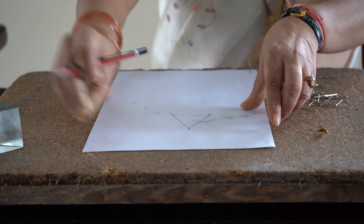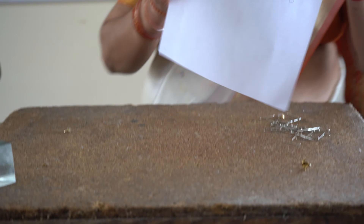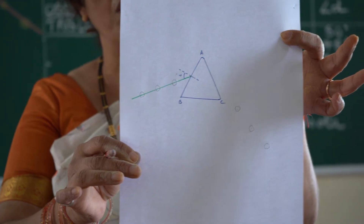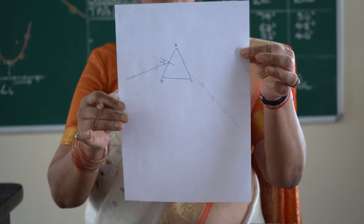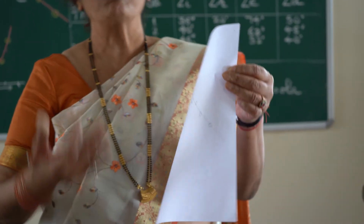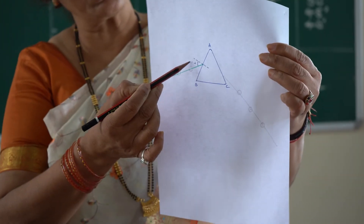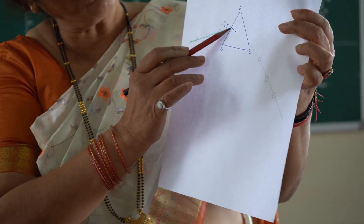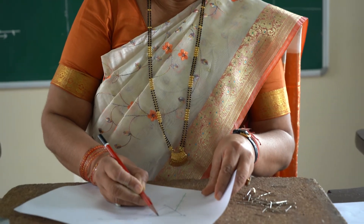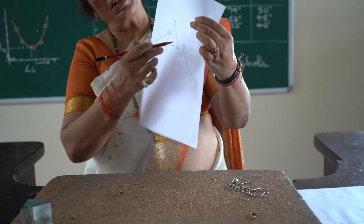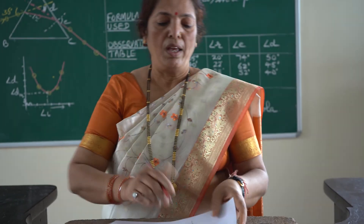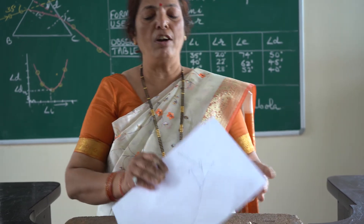Remove the paper and complete the remaining work. Join the three encircled points on the emergent side with a ruler to form the emergent ray. Draw a normal at the point of incidence and also at the point of emergence. Join the two points of incidence to get the refracted ray inside the prism and find the value of the angle of emergence.